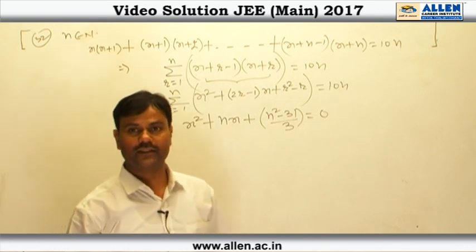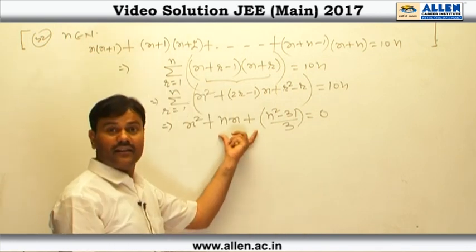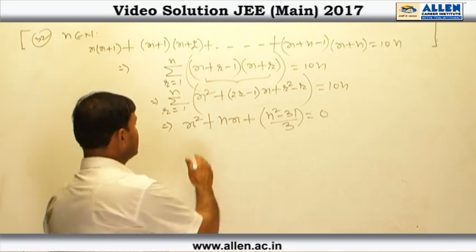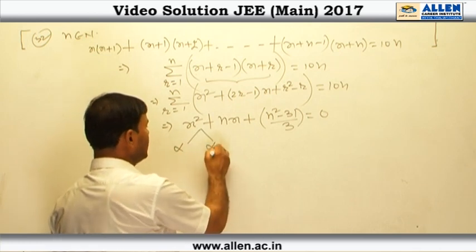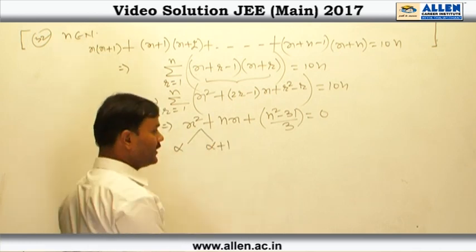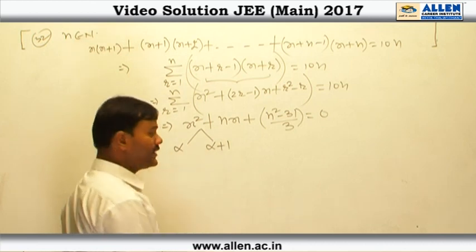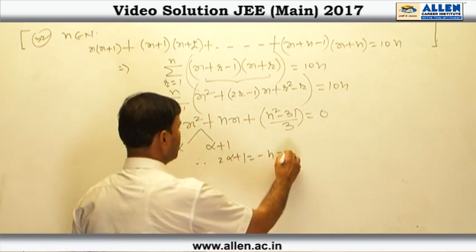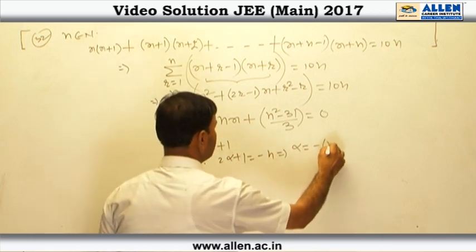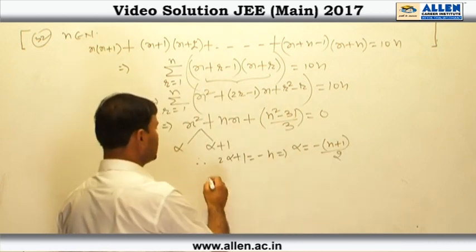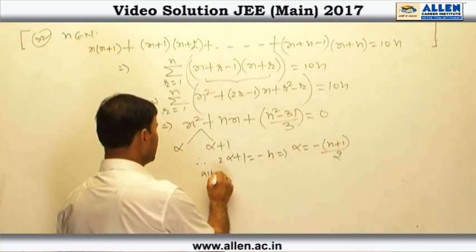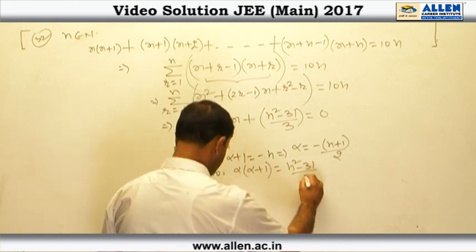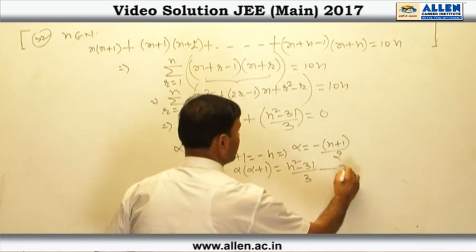In the question we are given that this quadratic equation has two consecutive integers as its roots. So we consider one root as α and the other as α + 1. From the relation between roots and coefficients, the sum of roots equals −N, which gives α = −(N+1)/2. The product of roots gives α(α+1) = (N² − 31)/3.